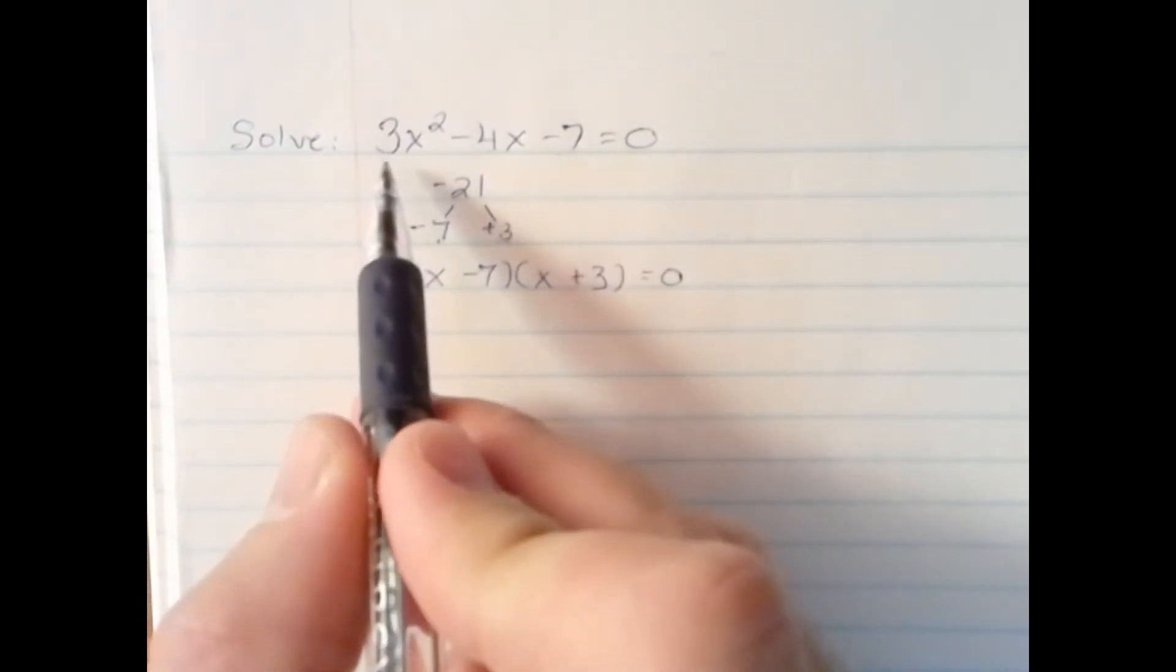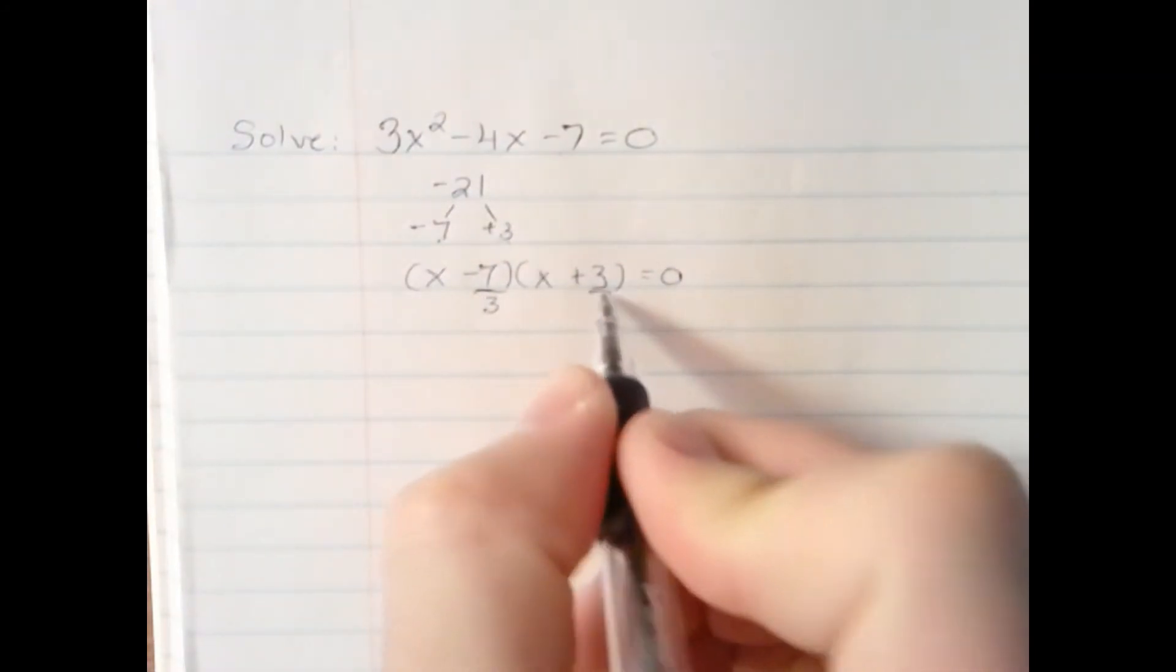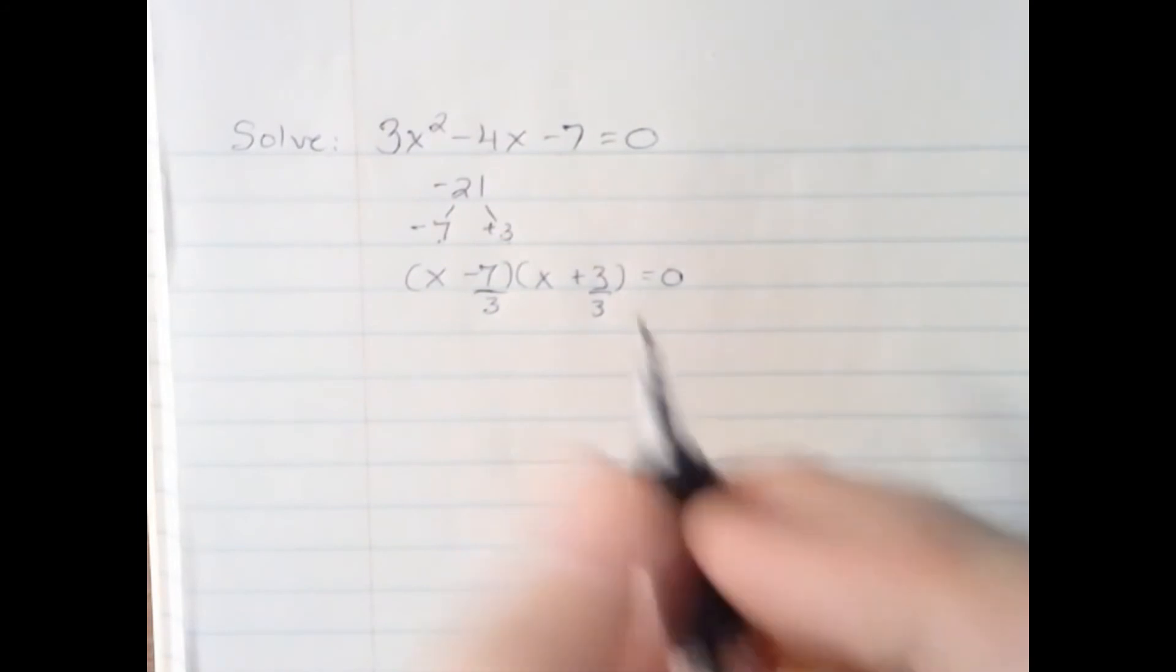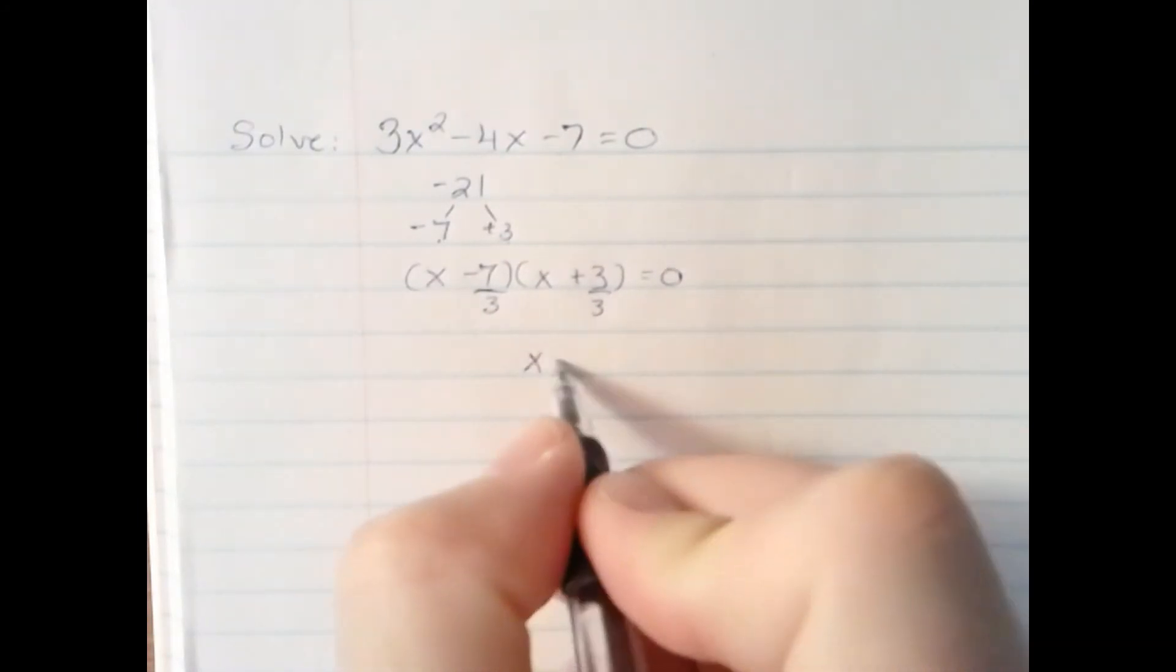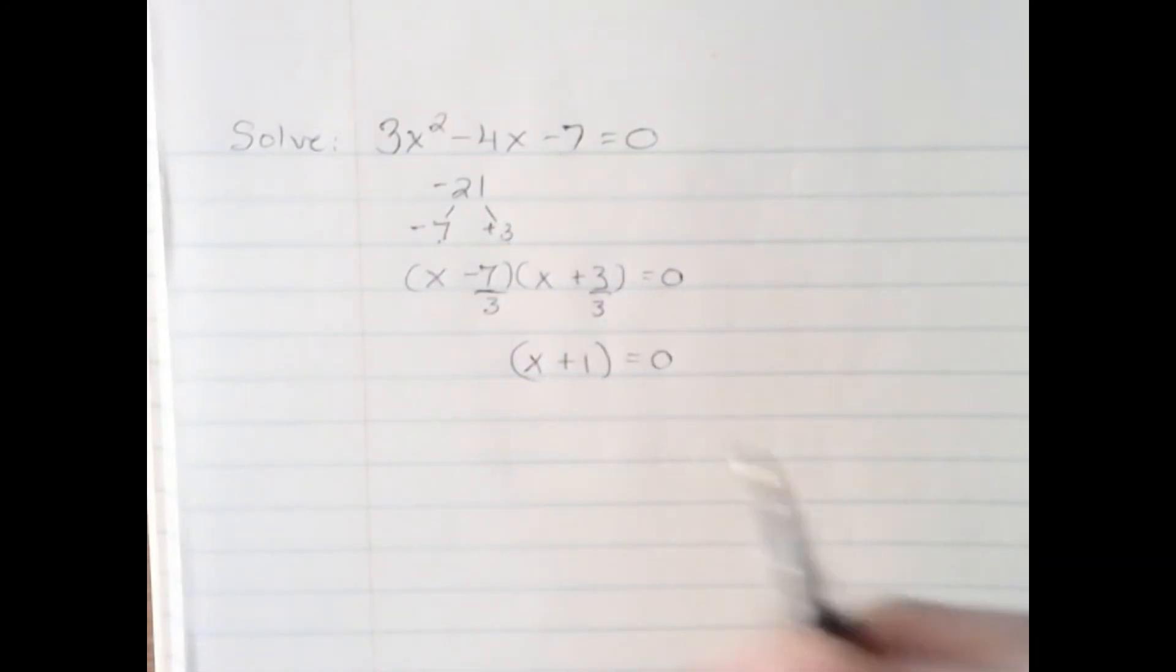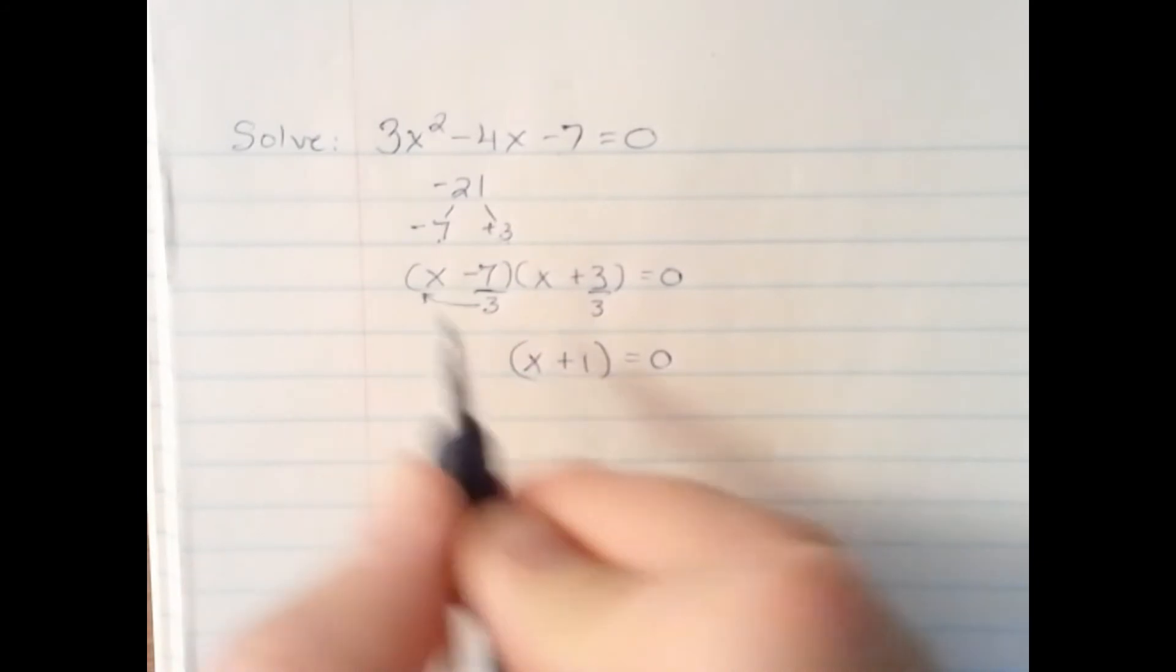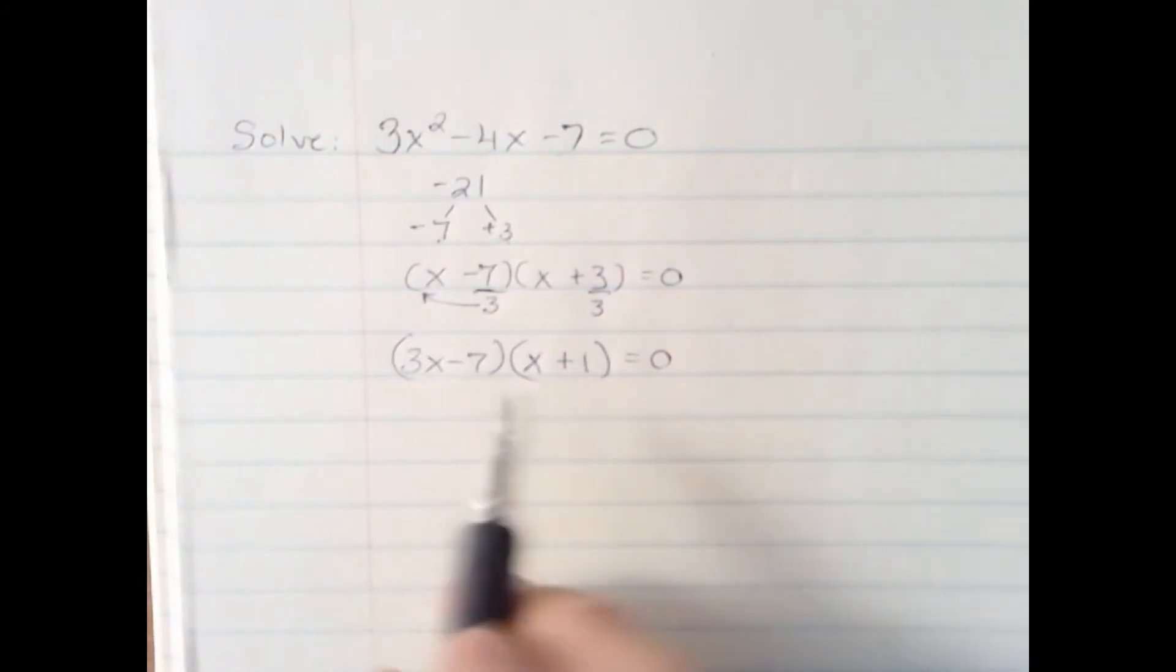We have to account for 3. So we take 3 and divide it into each term. If it divides, great. This one does, x plus 1. And that factorization is finished. But over here, 7 doesn't divide evenly by 3. So we're going to kick this 3 out in front. 3x minus 7. This is the correct factorization.